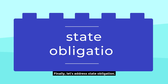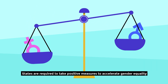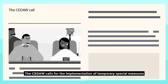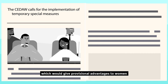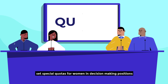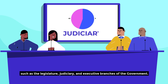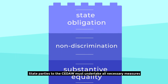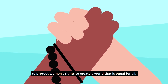Finally, let's address state obligation. States are required to take positive measures to accelerate gender equality through the promotion of women's rights. The CEDAW calls for the implementation of temporary special measures which would give provisional advantages to women while the environment is being corrected. States may, for instance, set special quotas for women in decision-making positions such as the legislature, judiciary, and executive branches of the government. State parties to the CEDAW must undertake all necessary measures to protect women's rights to create a world that is equal for all.